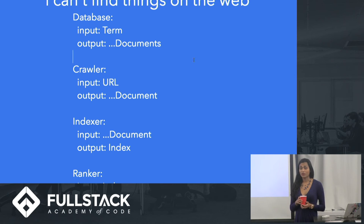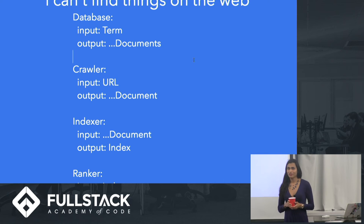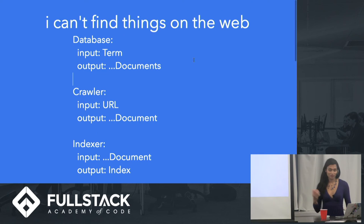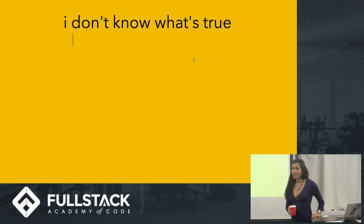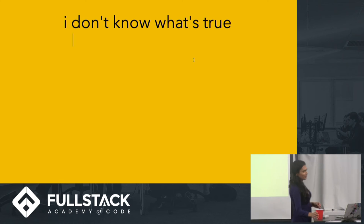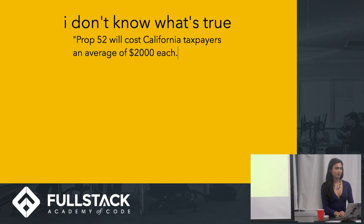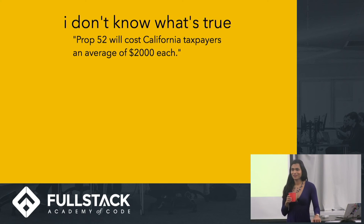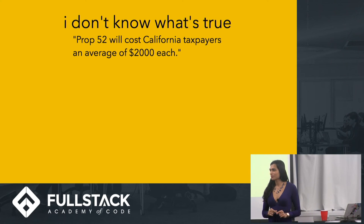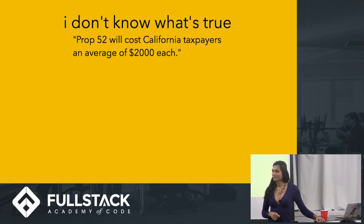I have one more increasingly crazy problem, and this one I don't have any great solutions to, and neither does anyone else — but maybe you do. The problem is: sometimes I read things and I don't know if they're true or not. For example, I recently read that Prop 52 will cost California taxpayers an average of $2,000 each. I have no idea if this is true. So how do I figure this out? First you'd have to know what Prop 52 is.